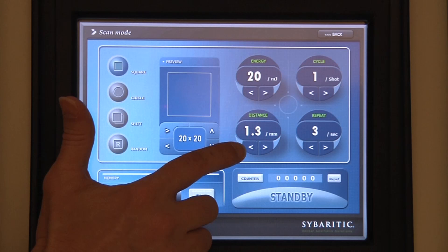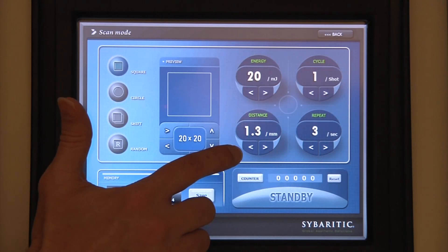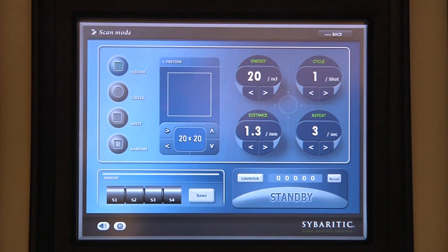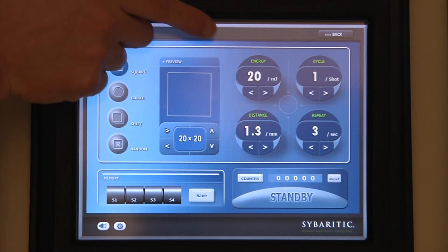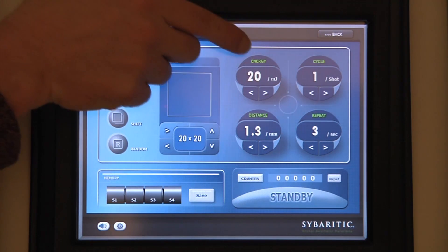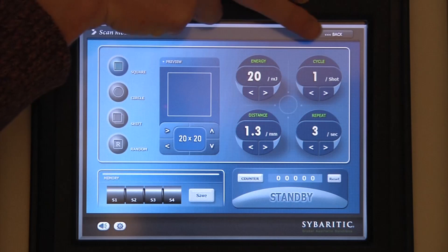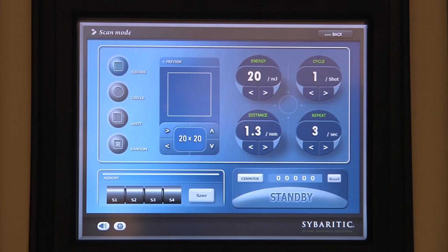The spot distance I would use in these cases is in the range of about one to one and a half millimeters between spots at a moderate energy setting. As I move from simple skin textural changes to a more aggressive treatment of deeper wrinkles, I would not only increase the energy, but we also have the ability to increase the number of cycles that are fired going deeper into the tissue.